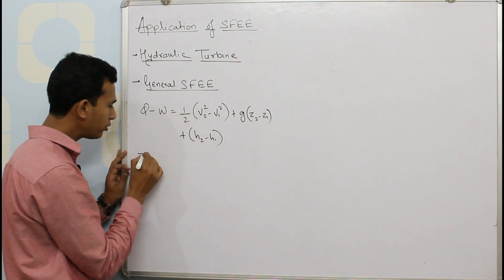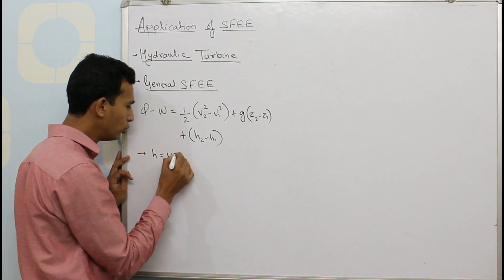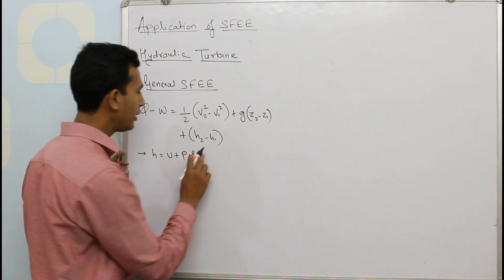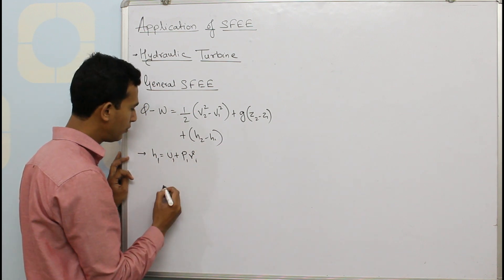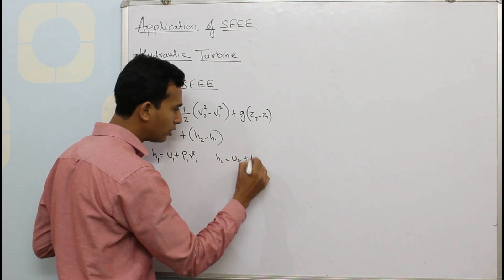Now we have also seen this enthalpy H is nothing but U plus P into specific volume V. So I can write H1 equals U1 plus P1V1 and H2 equals U2 plus P2V2.